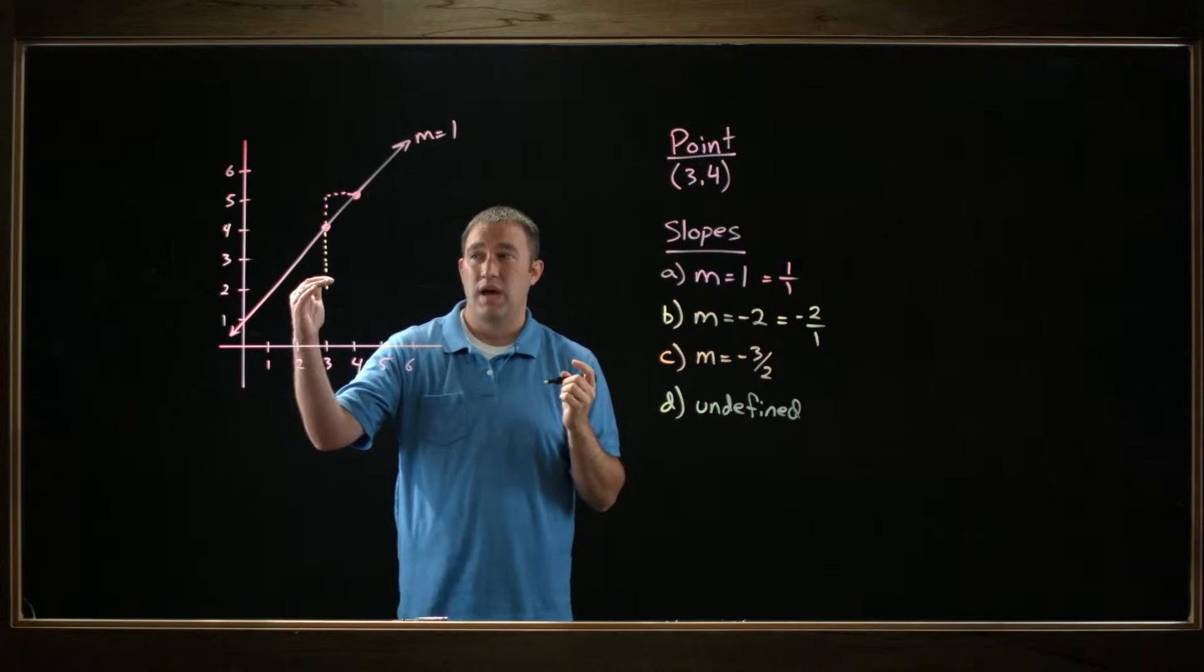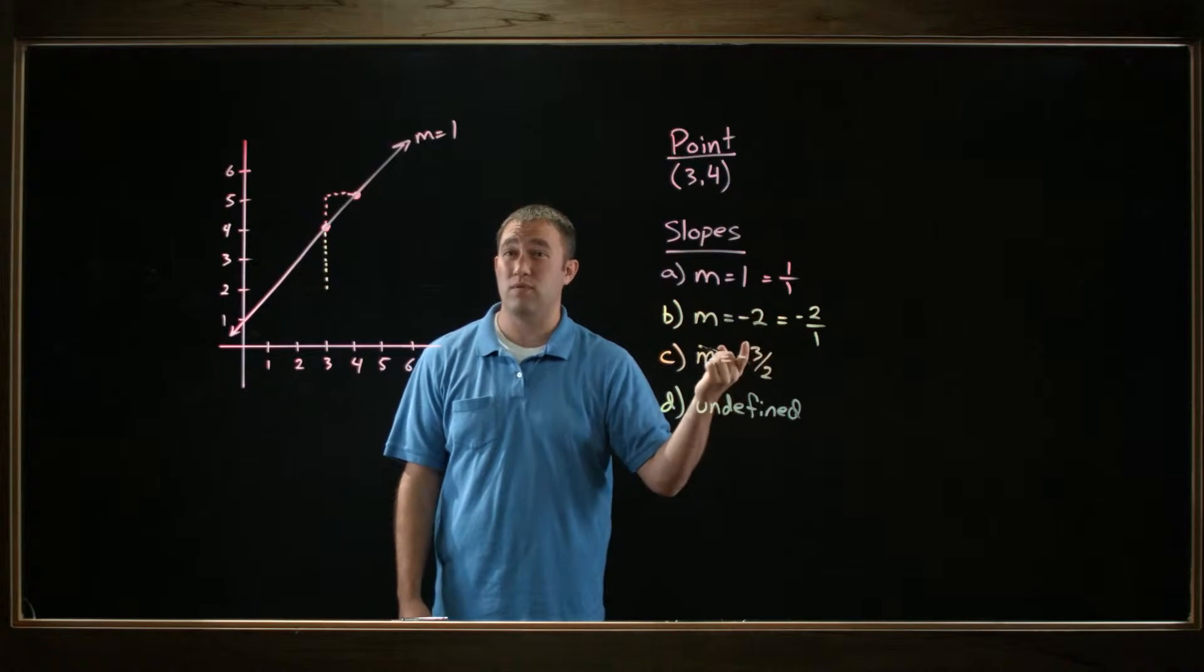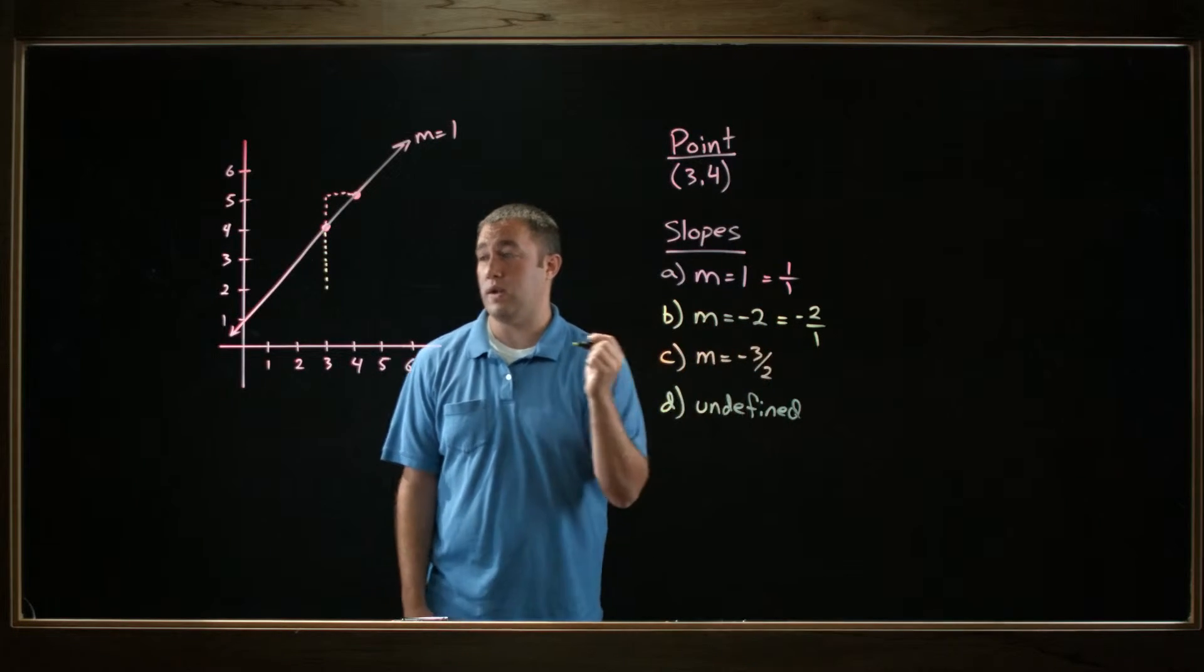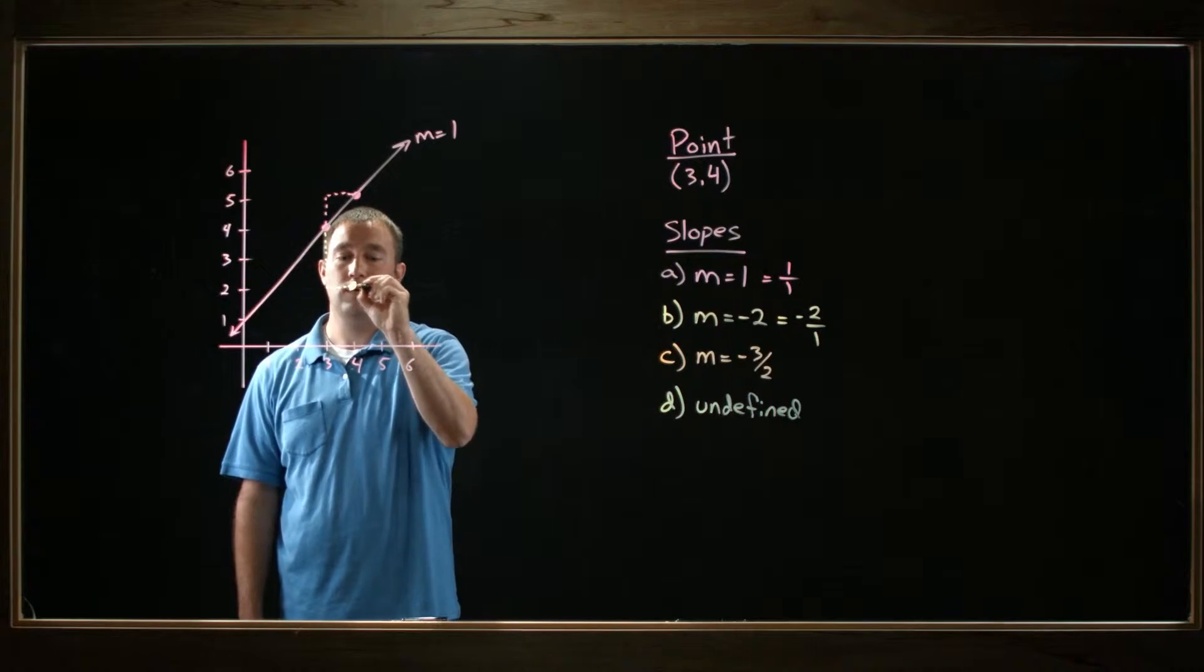And then I've already gone down. I don't want to go to the left because then that would be negative 2 over negative 1, which would be 2, not negative 2. I want to go over to the right one. I want to go over 1 to the point (4, 2).